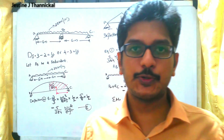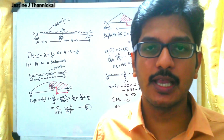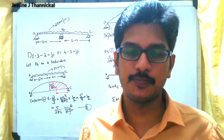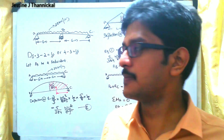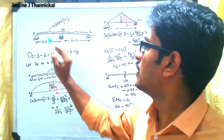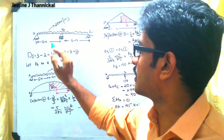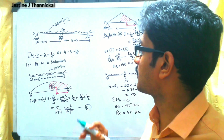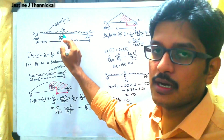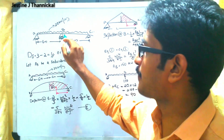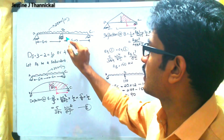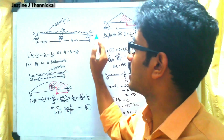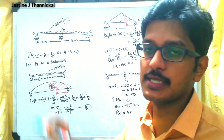Welcome to another video lecture. Today we will discuss a problem related to the consistent deformation method. Here a continuous beam is given with a UDL of 20 N per meter. At the mid-span point, a roller support is given, and at both ends, hinged supports are provided.